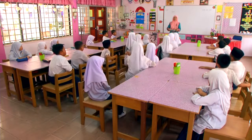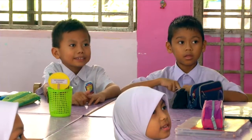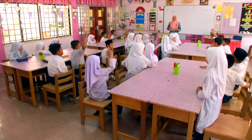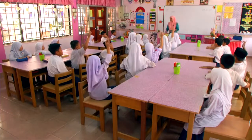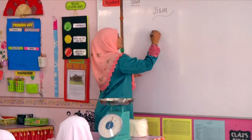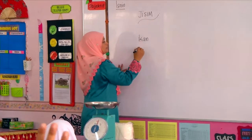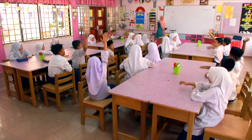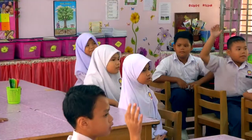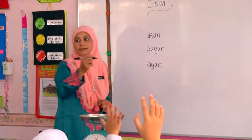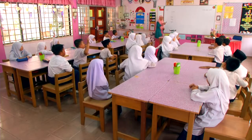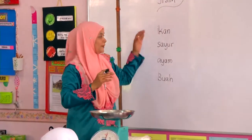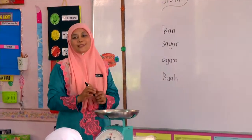Menimbang ikan. So Midi nak cuba timbang ikan, Sazliana jawab nak timbang sayur, dan ada yang jawab ayam dan buah-buahan. Jawapan yang kawan-kawan gambarkan semuanya betul. Jadi boleh tak kalau cikgu Rosliza nak timbang dua barang ni?